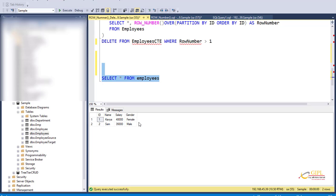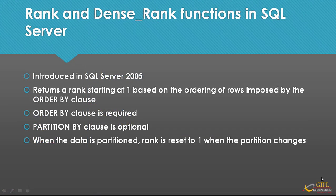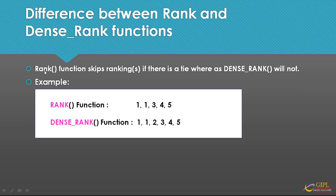Now let's move to the RANK and DENSE_RANK functions in SQL Server. Both functions were introduced in SQL Server 2005. Both of these functions return a rank starting at 1 based on the ORDER BY clause. ORDER BY clause is required; PARTITION BY clause is optional. When the data is partitioned, the rank is reset to 1 when the partition changes. Now we have two different functions. The difference between RANK and DENSE_RANK is that RANK keeps gaps in ranking if there is a tie, whereas DENSE_RANK will not. Let's understand this with an example — let's say we have two rows where the rank is tied.